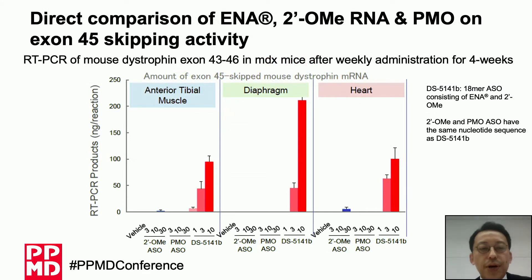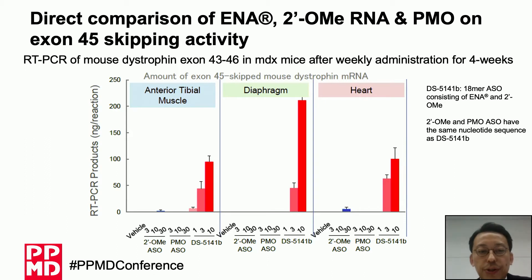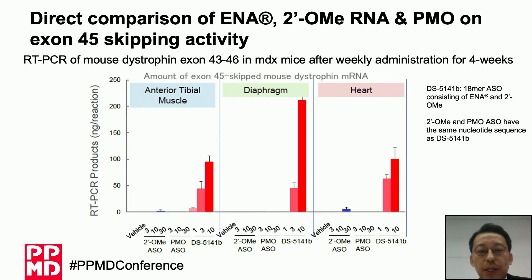We evaluated the exon 45 skipping activity of our compound compared to 2'-O-methyl ASO and PMO in anterior tibular muscle, diaphragm, and heart. DS5141B, 2'-O-methyl, or PMO with the same nucleotide sequence were administered to DMD model mice once a week for four weeks, and exon skipping activity was measured by RT-PCR. Our compound induced clear exon skipping at over 3 mg per kilogram, while 2'-O-methyl ASO showed very slight activity, and PMO did not induce any skipping up to 30 mg per kilogram. The same trends were also observed in diaphragm and heart.